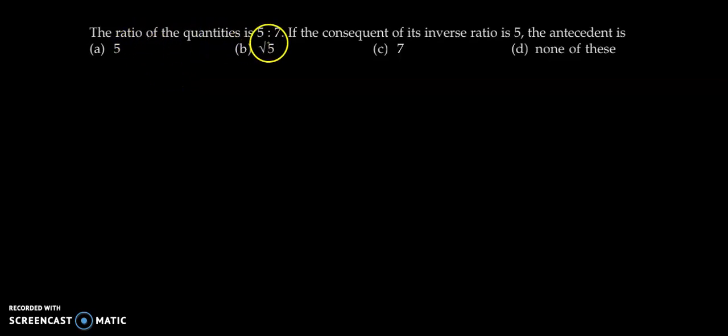The ratio of quantities is 5 is to 7. So we have been given the ratio between two quantities as 5 is to 7. If the consequent of its inverse ratio is 5, then the antecedent is...